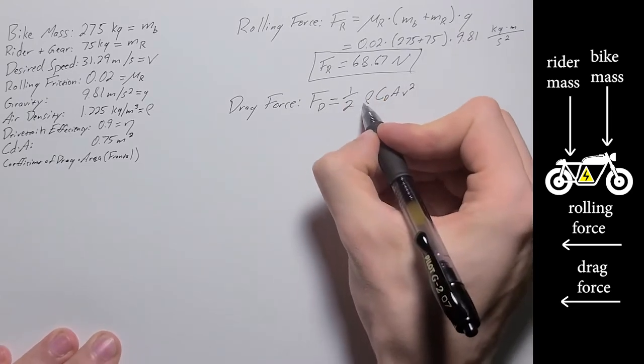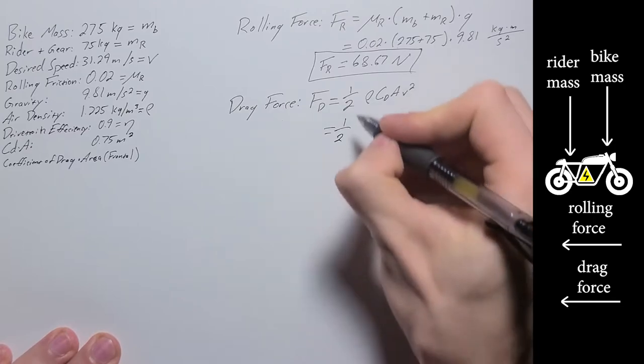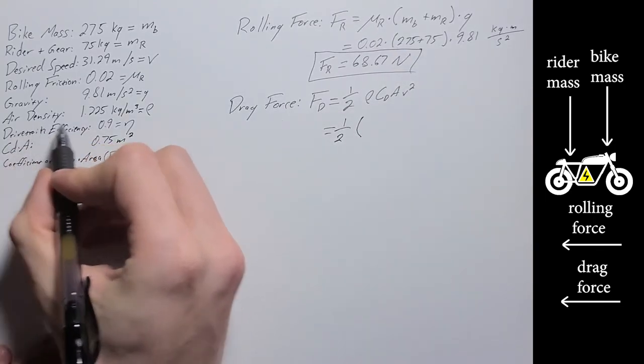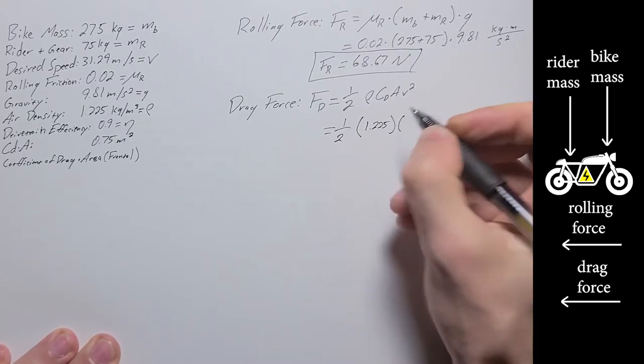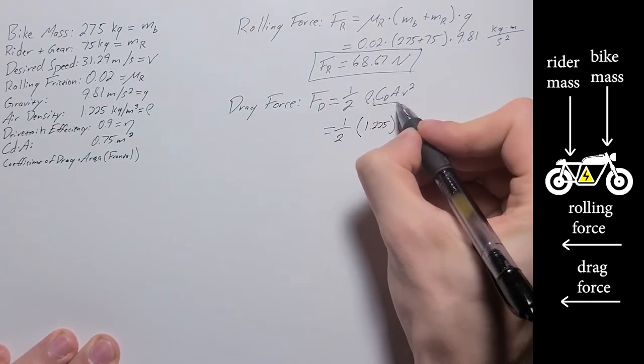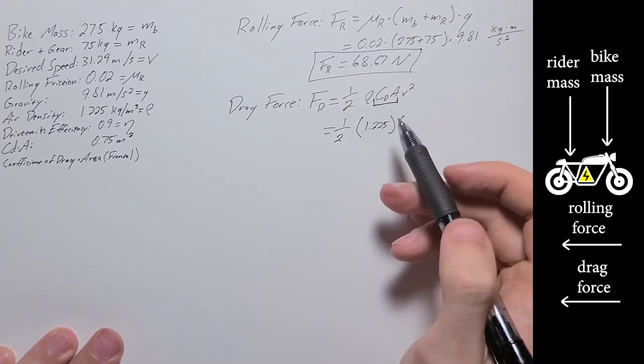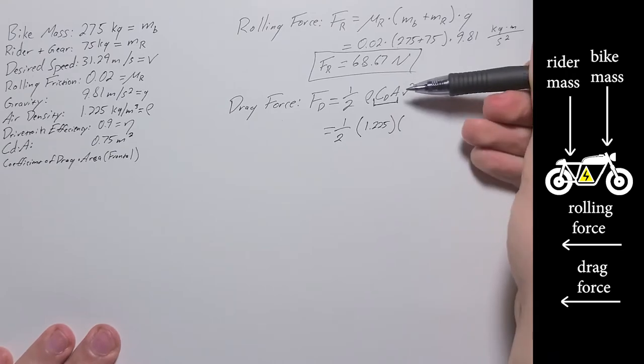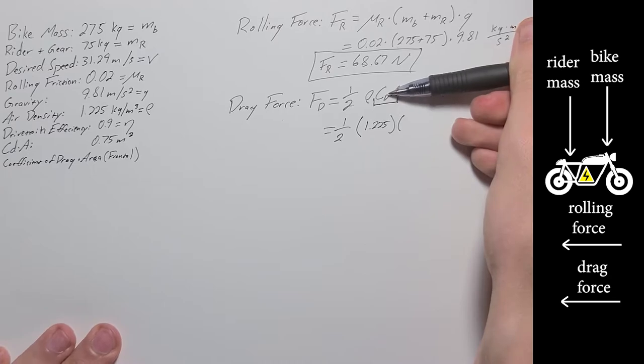Drag is going to equal one half rho CDA times velocity squared. So in this we're using one half as a constant times our rho value, that's our air density, 1.225. And then next up is our combined CDA value. I'm using a combined value because I can find the frontal area, I can calculate that pretty easily. Finding the coefficient of drag requires testing.